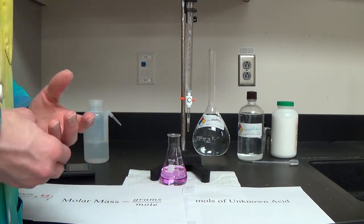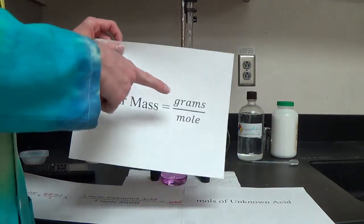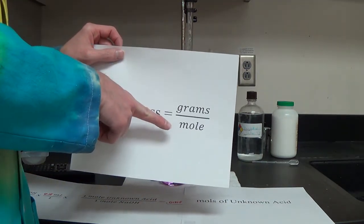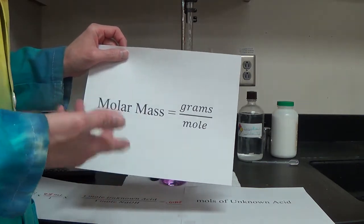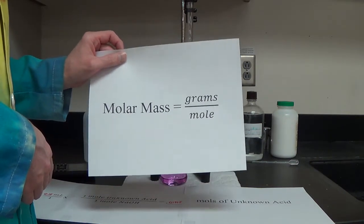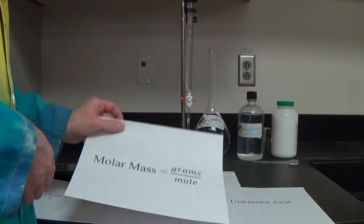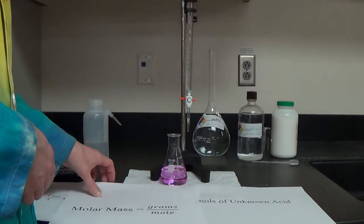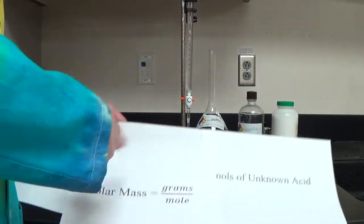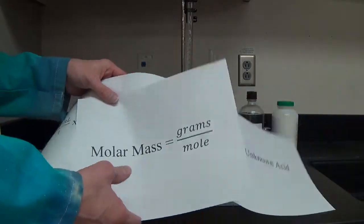You only double rinse your burette before you begin, not afterwards. So to summarize: we measure grams, we do titration to find moles, we divide in the calculator, and we find our molar mass. We've answered the lab question. But wait — everything I just did is actually a lie, absolutely a lie.